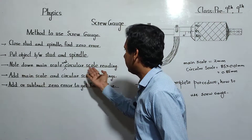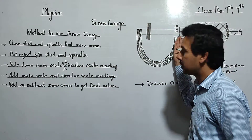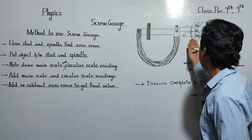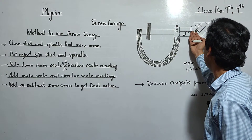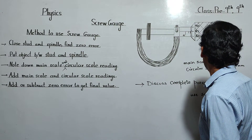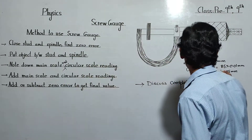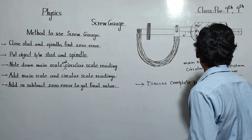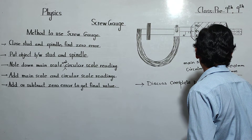Completing this step: note both the main scale reading and the circular scale reading. In our example, the main scale reading is 2 mm — that is, 2 divisions are visible. The circular scale reading is found by identifying which division coincides with the index line — in our example that gives 0.85 mm. Next step: add the main scale reading and the circular scale reading together.